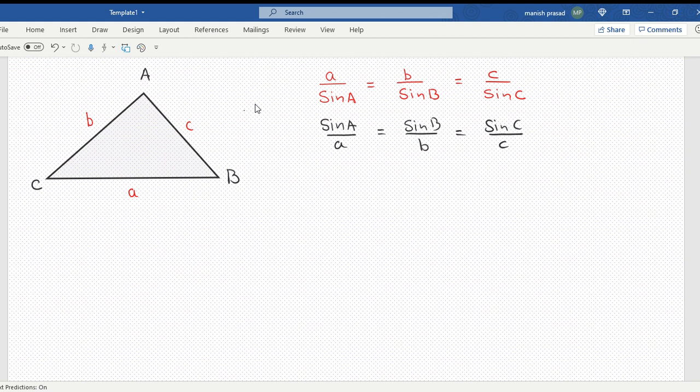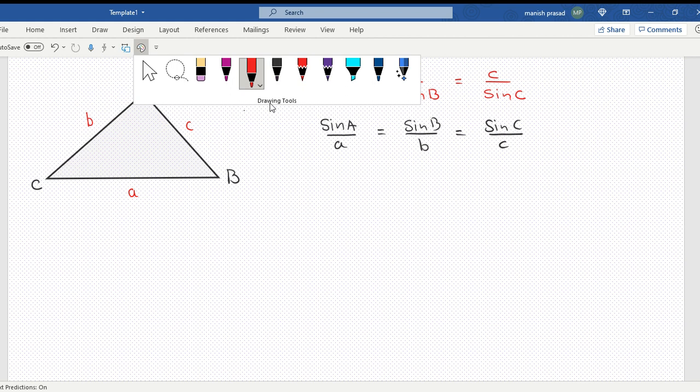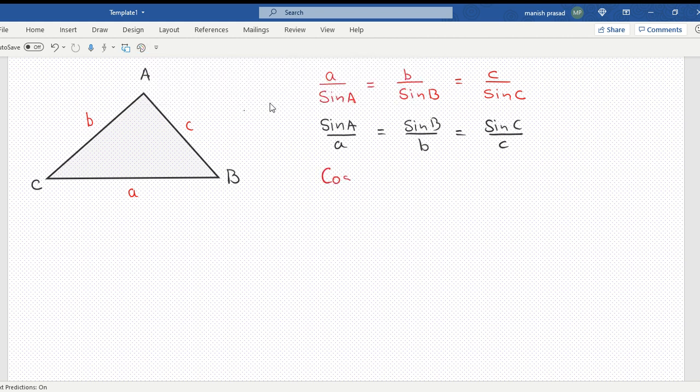Now let's look at the cosine rule. In the cosine rule, remember that if you have cos A, then we take the sum of the squares of the adjacent sides. The adjacent sides are B and C. The sum of the squares of the adjacent side minus the square of the opposite side divided by 2 times the product of the adjacent sides.